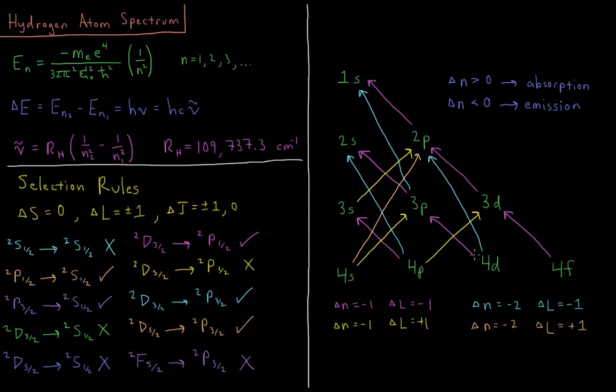We wouldn't be able to go from 3D to a 1S. That would be delta L equals two. We wouldn't be able to go in here. This would be no change in energy if we stayed at the same N.